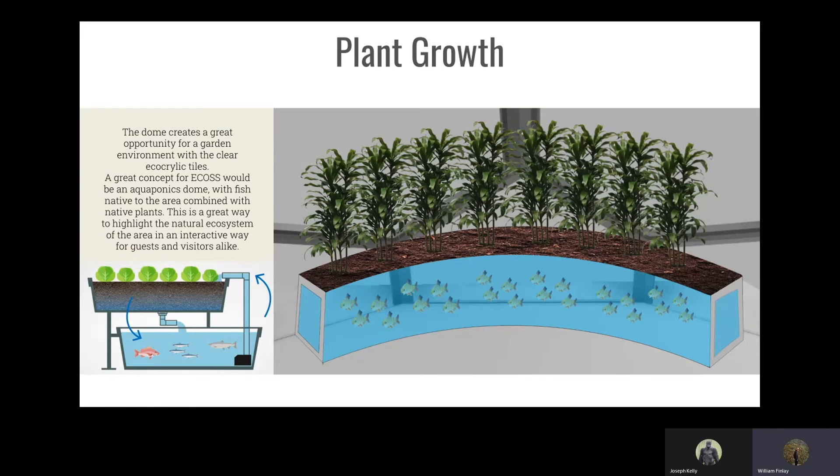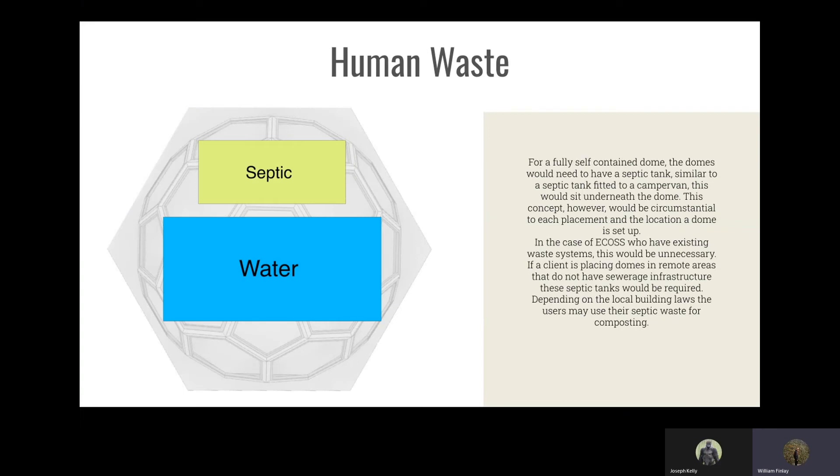For a fully self-contained dome, the domes would need to have a septic tank, similar to a septic tank fitted to a camper van. This would sit underneath the dome. This concept, however, would be circumstantial to each placement and the location a dome is set up in.